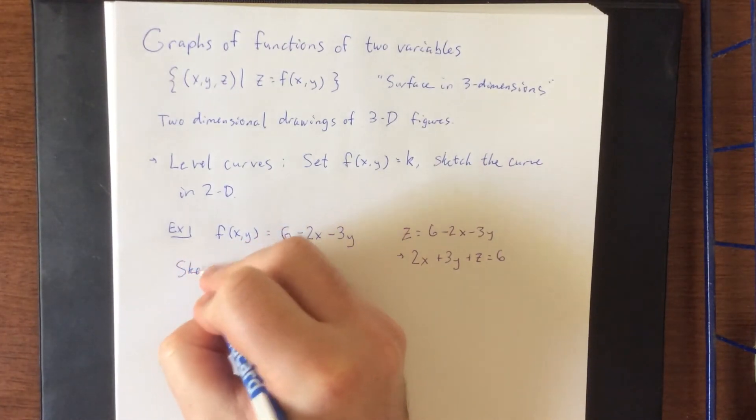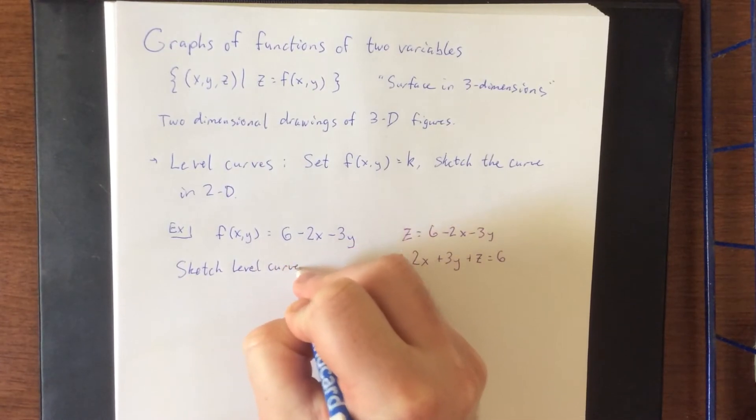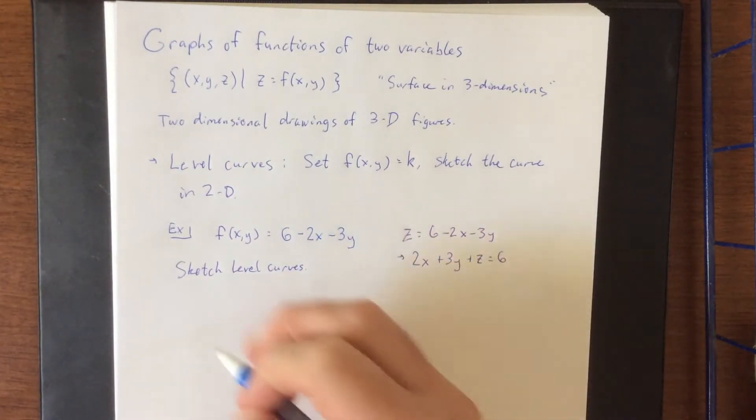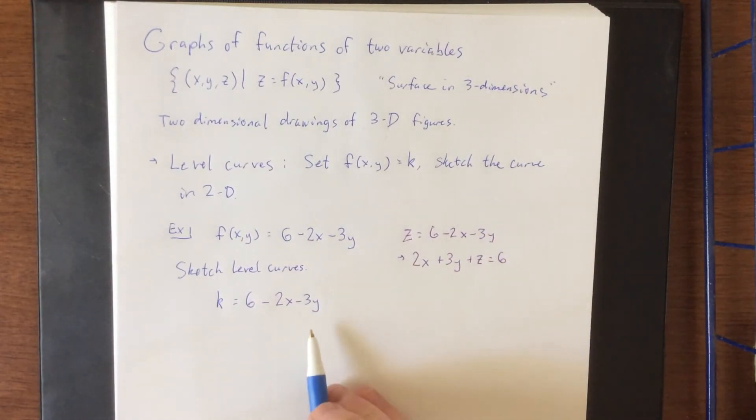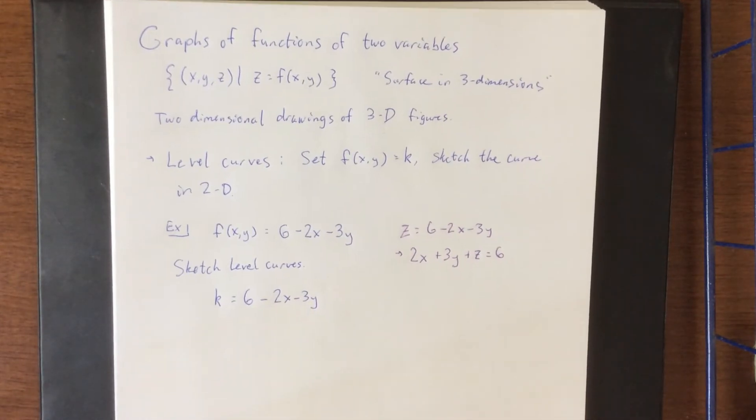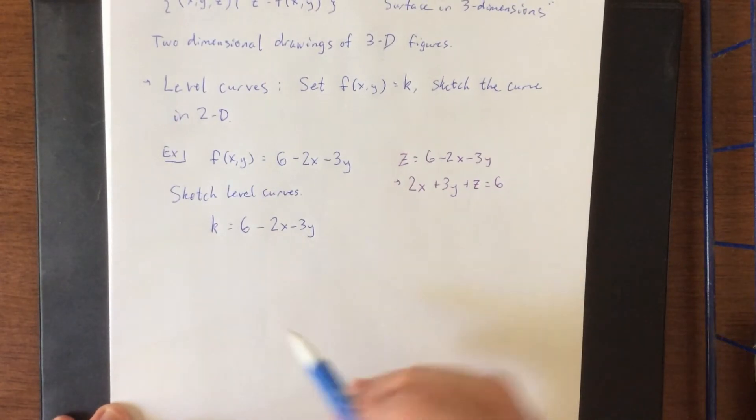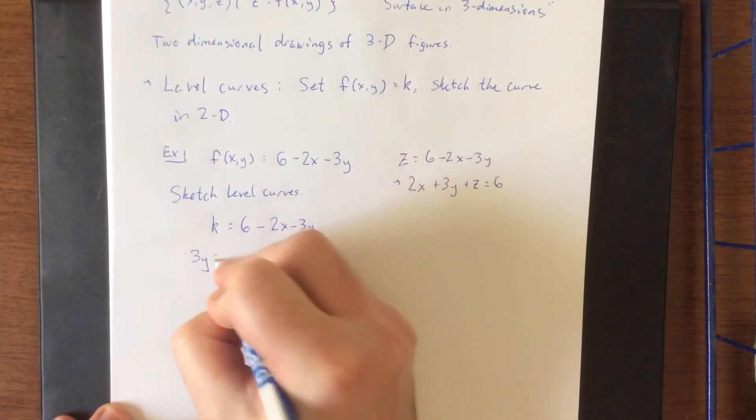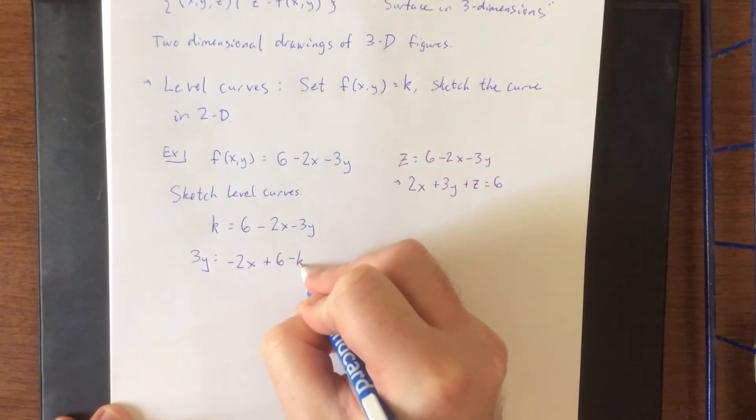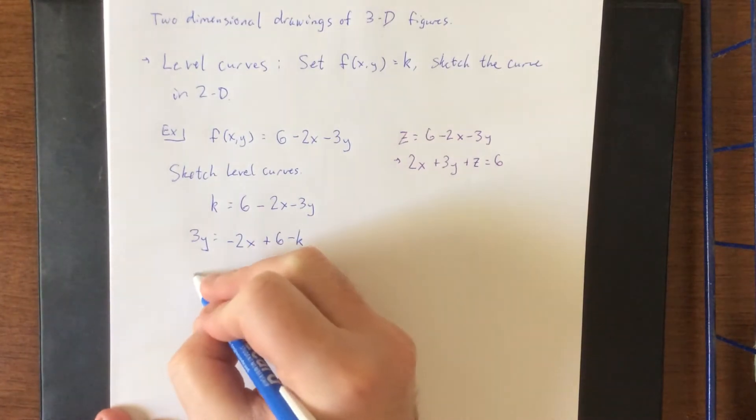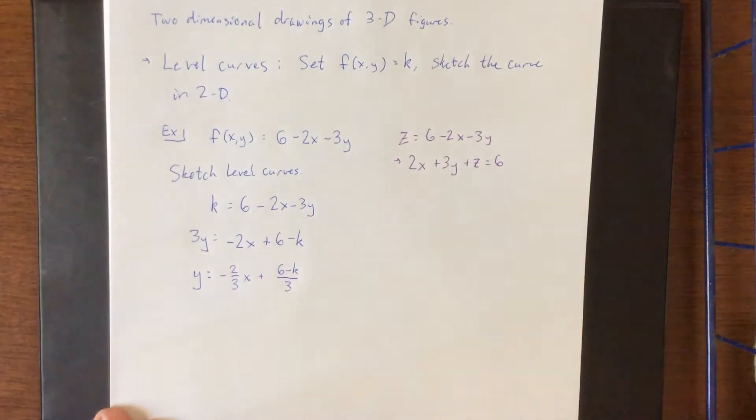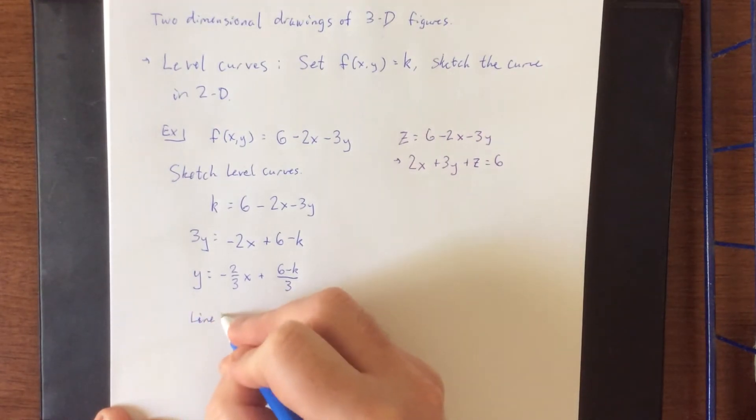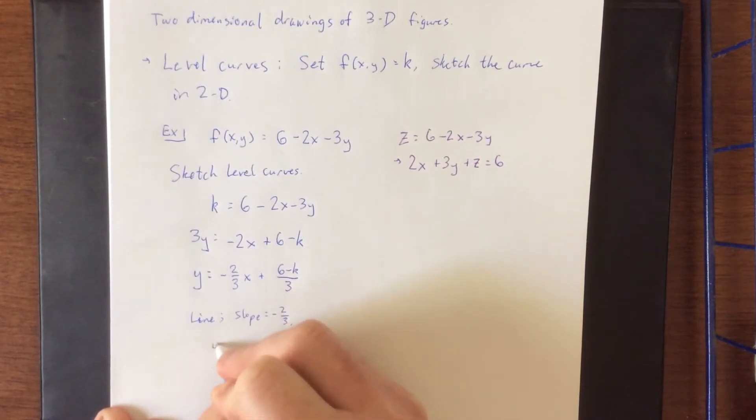So what we're going to do is sketch several level curves. And the way that we'll do so is we'll set our function equal to a constant. So now we have k is equal to 6 minus 2x minus 3y. We'll get 3y equals negative 2x plus 6 minus k, and then divide both sides by 3. We'll get y equals negative two-thirds x plus 6 minus k all over 3. So this would be considered a family of lines with a slope equal to negative two-thirds and a y-intercept at the point 0 comma 6 minus k over 3.